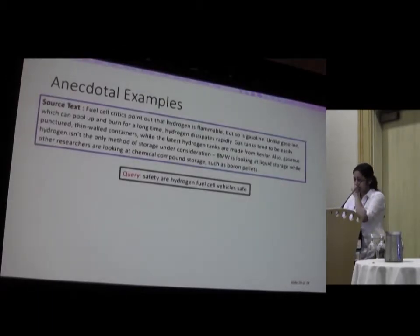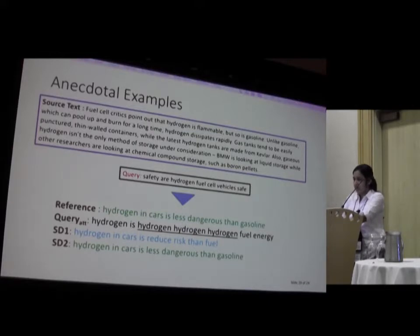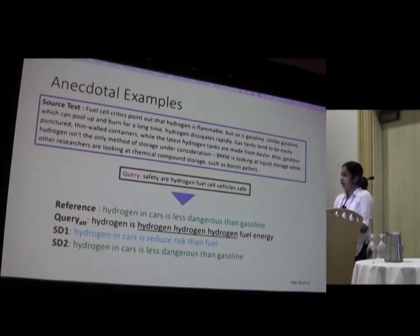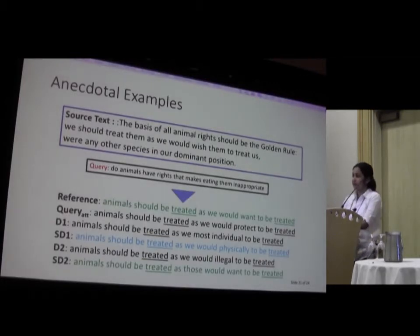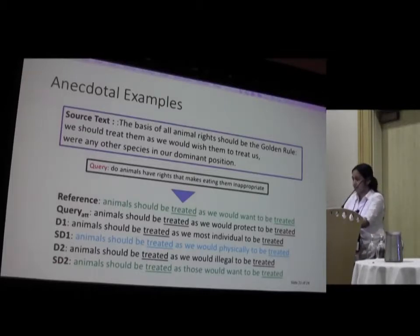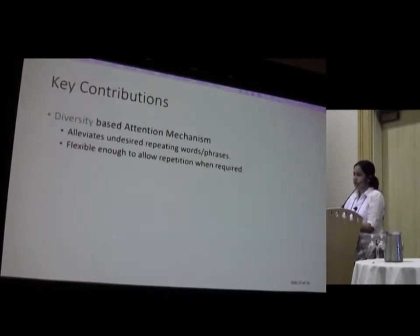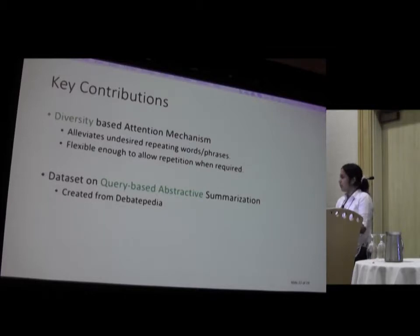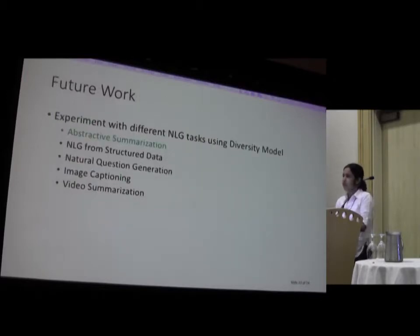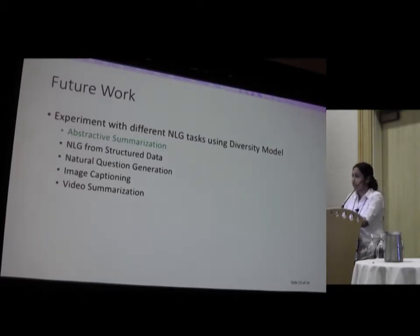Some examples are listed in the paper. You can see that the phrase 'hydrogen' is being repeated if the diversity LSTM cell is not present, but when we bring in the diversity component the repetitions are gone. There is also one example where we expected the model to repeat and our model successfully does so — repeating the word 'treated.' The key contributions of this paper are: first, the diversity based attention mechanism, which is not restricted to query based abstractive summarization and can be applied to different NLG tasks; and second, a new dataset for query based abstractive summarization. In future work, we will experiment more with the diversity cell for different NLG tasks.